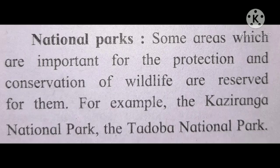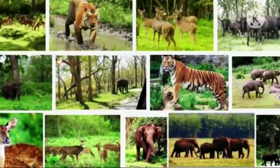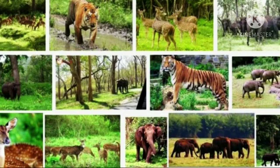When you visit the national park at Borivali, you can see monkeys and various small animals. But when you visit Kaziranga National Park or Tadoba National Park, you can see large animals such as lions and tigers. One national park is also in Gujarat where you can see lions, tigers, and deer. So all these animals are conserved in national parks.